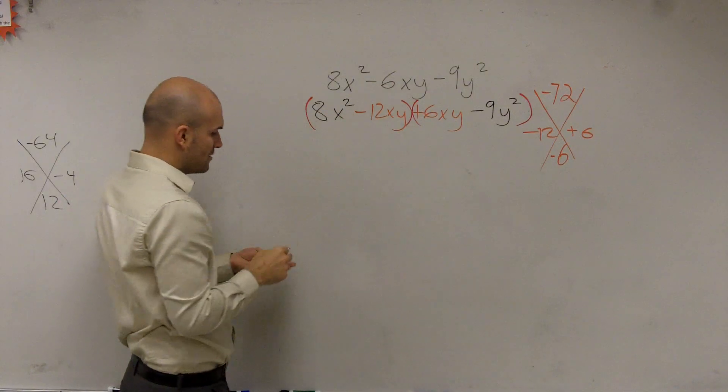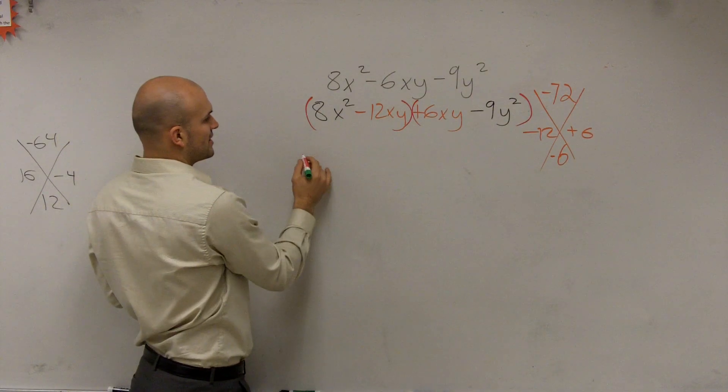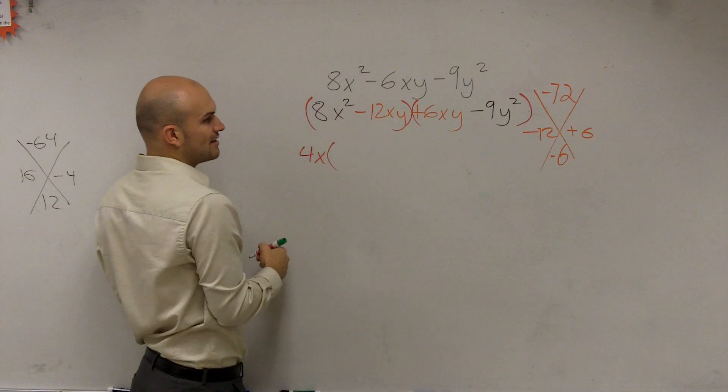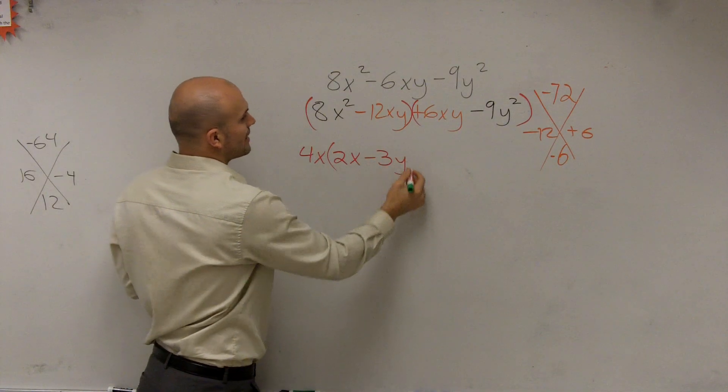So then I look in here and I say, what do my first two terms have in common? Well, we can factor out a 4x. When I factor out a 4x, I'm left with a 2x minus 3y.